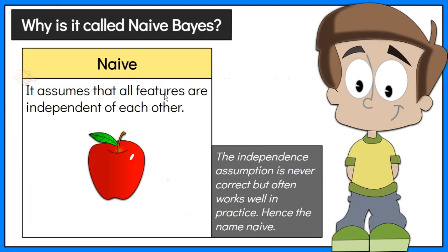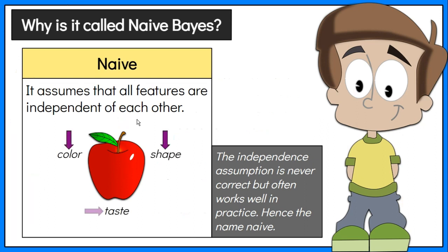It's called Naive because it makes the assumption that all features are independent of each other. For example, if the fruit is identified on the basis of color, shape, and taste, each feature individually contributes to identifying the kind of fruit without depending on each other.